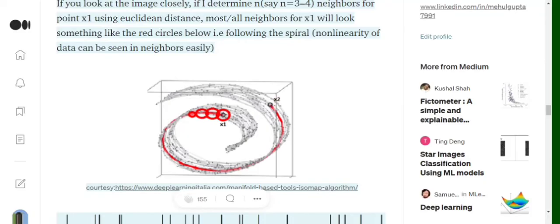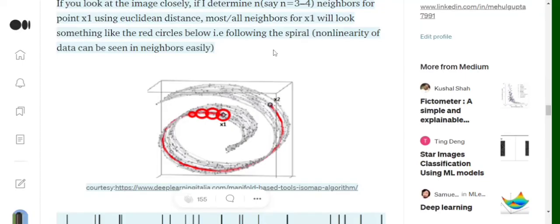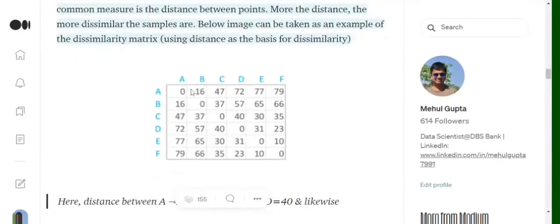Once we are done with that, we will be creating an adjacency or neighborhood matrix. A neighborhood matrix is pretty similar to the dissimilarity matrix that we talked about, but in place of that we will be putting a one between all those points where we found them to be neighbors.